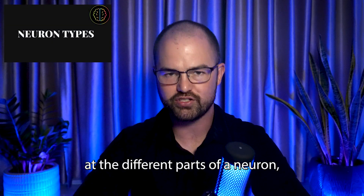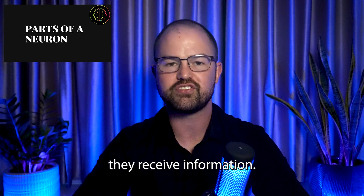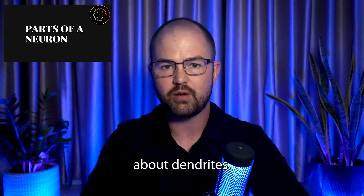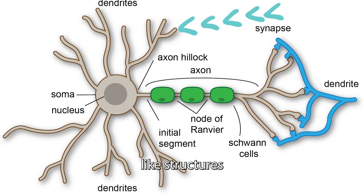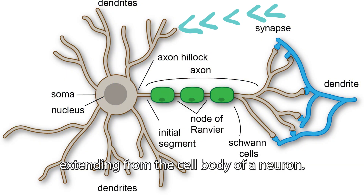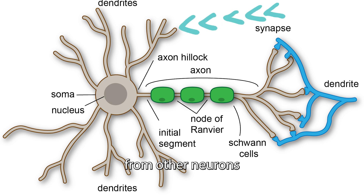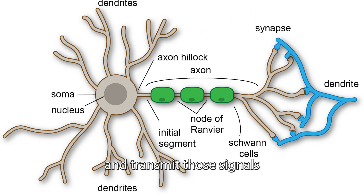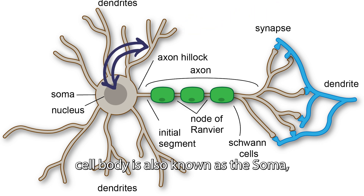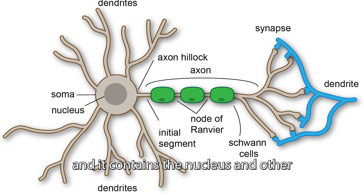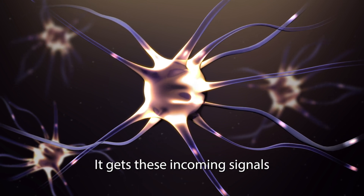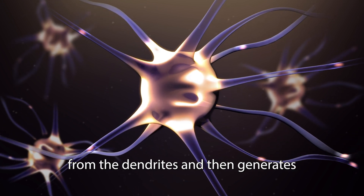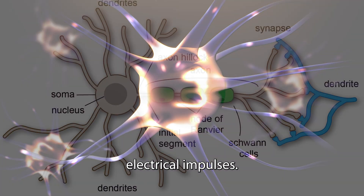Now let's take a look at the different parts of a neuron, starting with where they receive information. Dendrites are branch-like structures extending from the cell body of a neuron. They receive incoming signals from other neurons and transmit those signals towards the cell body, which is also known as the soma. The soma contains the nucleus and other cellular components of the neuron, and it generates electrical impulses from the incoming signals.